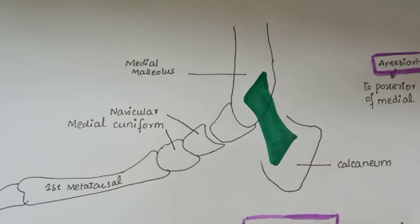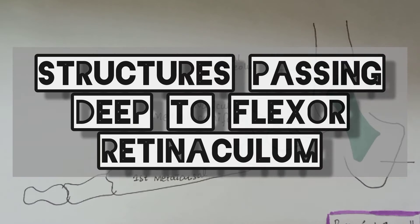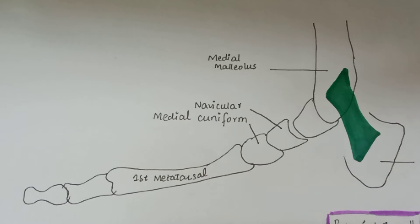Now we will see the structures that pass deep to the flexor retinaculum. There are three tendons, one nerve, and one artery.